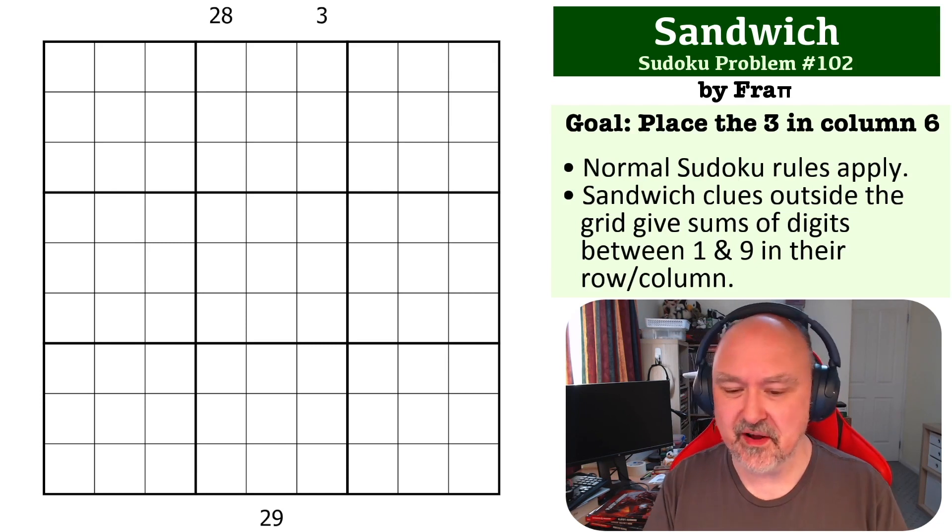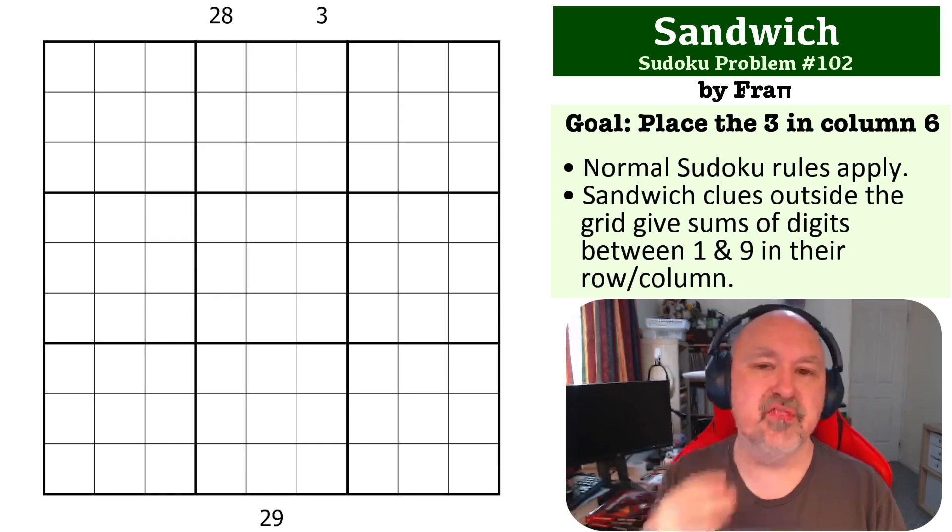There is a link below where you can get a copy of the grid so you can try this one for yourself. The way sandwich clues work is that the clues outside the grid, in this case in columns (if there were some beside the grid that would work for rows), are the total of the digits that must be between the one and the nine in those columns.